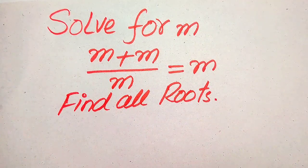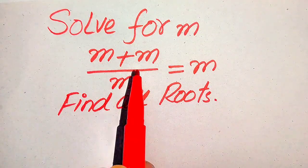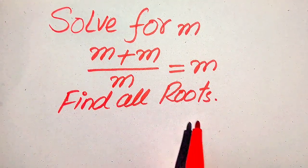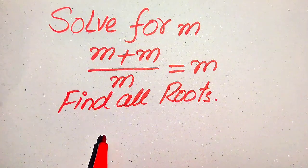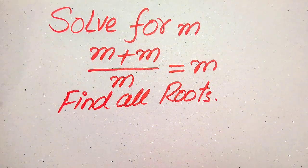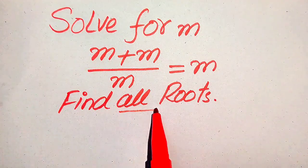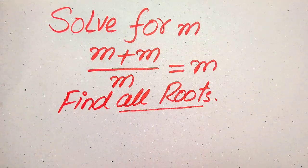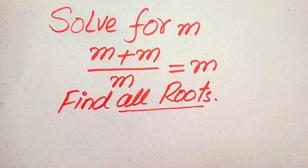Hello everyone. How to solve this problem for the values of m: if we have m plus m divided by m equals m, we solve this problem for the values of m — in other words, we find all the roots of this equation, and at the end we check which roots are solutions and which roots are extraneous roots.